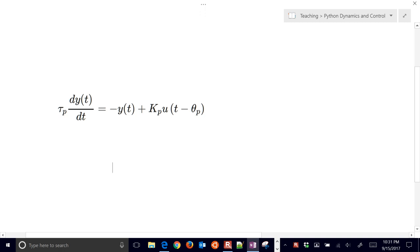We're going to cover the first order plus dead time model. This is often called an FOPDT, or sometimes we call it first order plus time delay, so FOPTD.